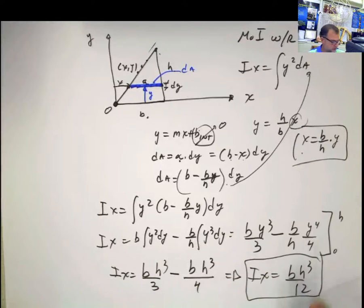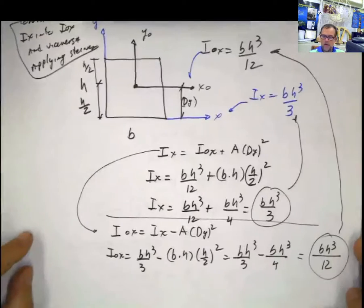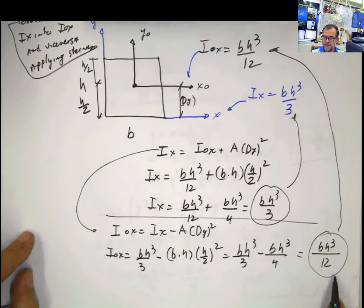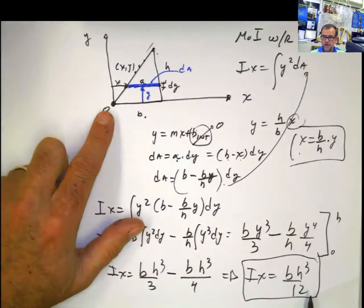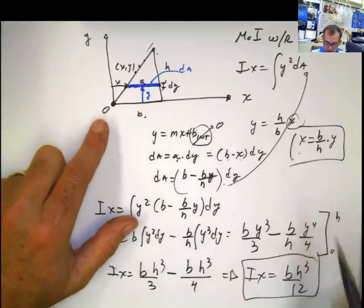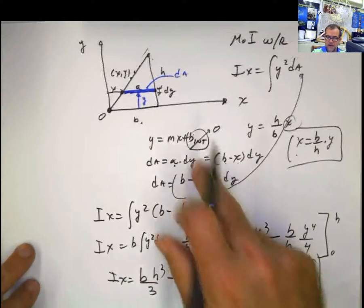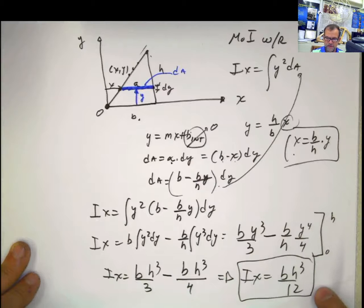Do not get confused with this value. We did before the moment of inertia of a rectangle with respect to the centroid, which is bh cubed divided by 12. However, this is the moment of inertia of the triangle, not with respect to the centroid but with respect to the base. This is easy compared with the other one we did.